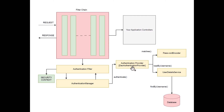For the Authentication Provider to validate the credentials, it needs two things: a Password Encoder and a UserDetailsService. The Password Encoder handles the fact that passwords are always stored in encoded form. To compare the entered password against the stored one, some processing is needed, and that is what the Password Encoder helps with — it encodes the entered password so the Authentication Provider can compare them.